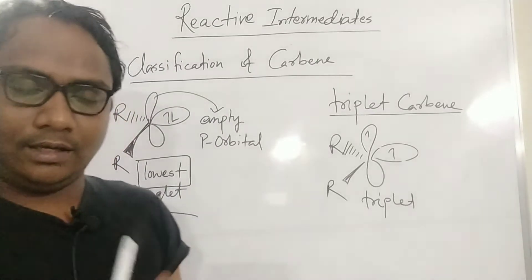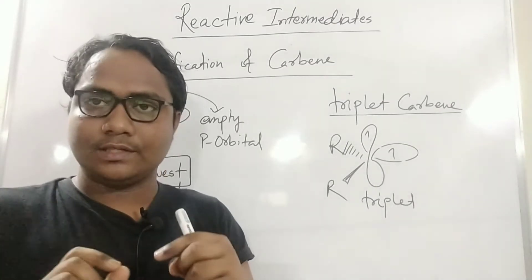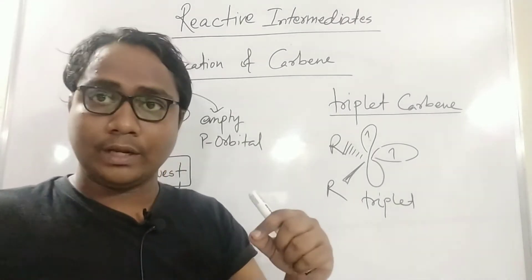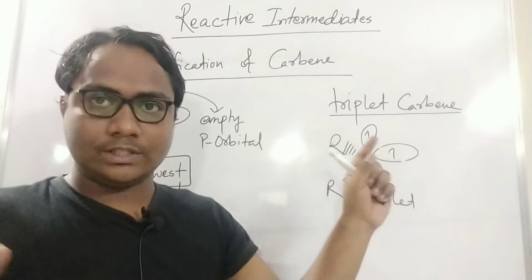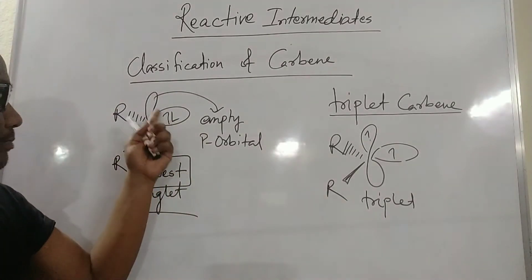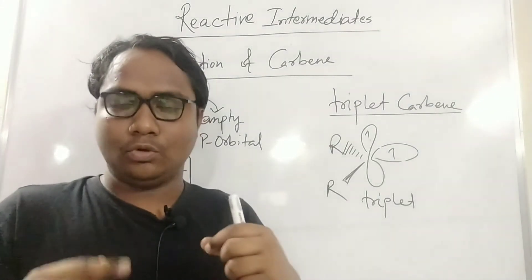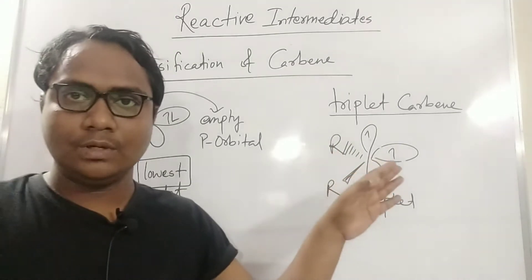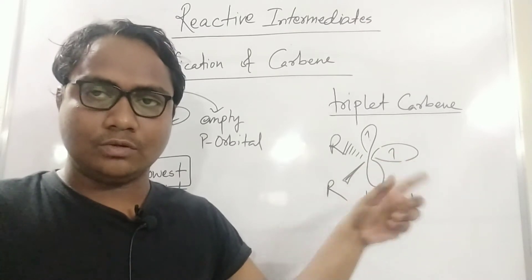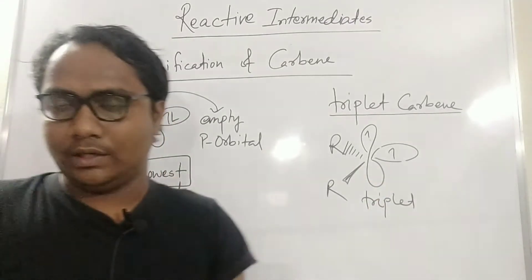If triplet carbene is generated in a reaction, it will undergo bond rotation to flip the spin of one electron before reacting. For singlet carbene, no bond rotation is necessary because the electrons already have opposite spins — it can directly attack. Bond rotation adds extra steps, so reactions generally prefer the singlet pathway.